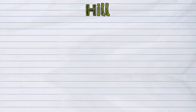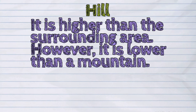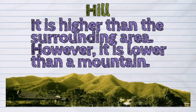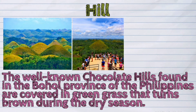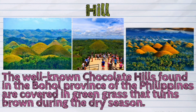A hill, like a mountain, is higher than the surrounding area. However, it is lower than a mountain. The well-known Chocolate Hills, found in the Bohol province of the Philippines, are covered in green grass that turns brown during the dry season.